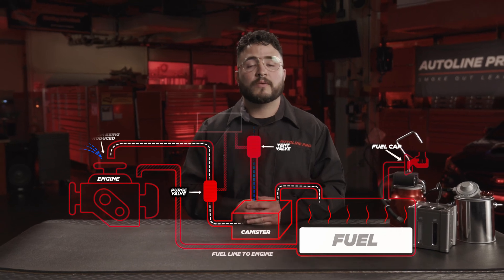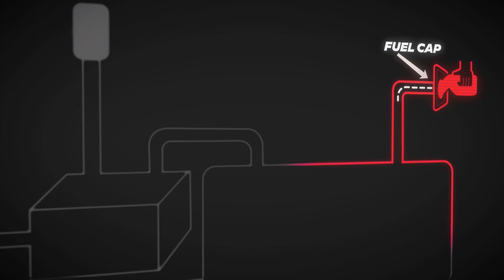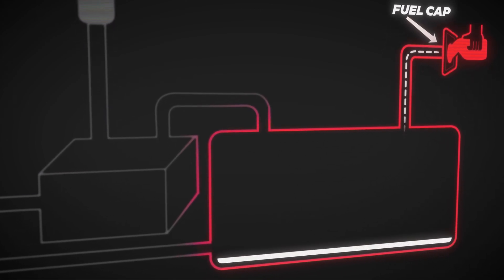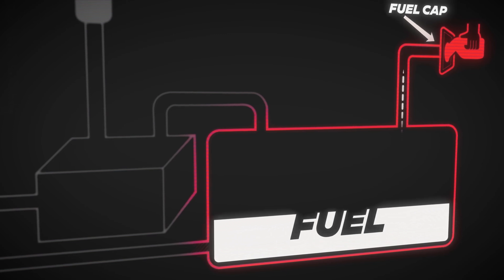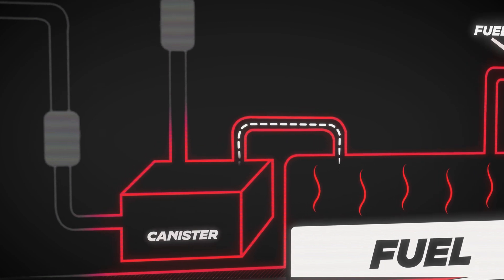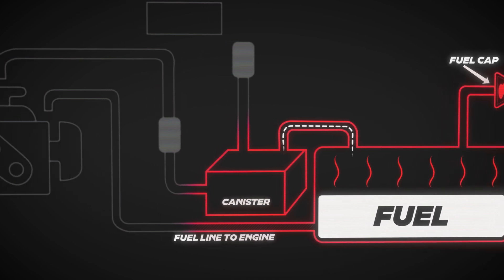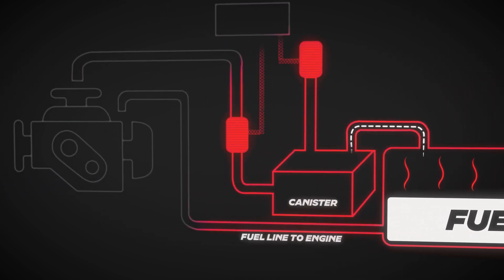Fuel is introduced into the system by removing the cap at the filler tube. As fuel travels down the filler tube, it enters the fuel tank where it is stored for later use. Because fuel is very volatile, it evaporates and produces vapors. From the fuel tank, the vapors build up and travel to the charcoal canister, where they are stored. The vapors then travel through an interconnected tubing system to get to the engine so they can be burned up.